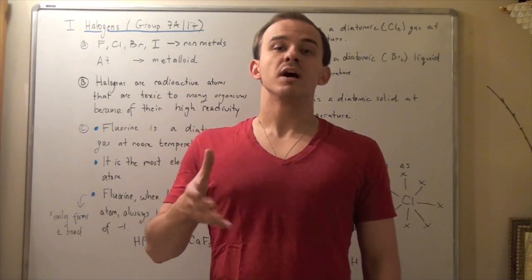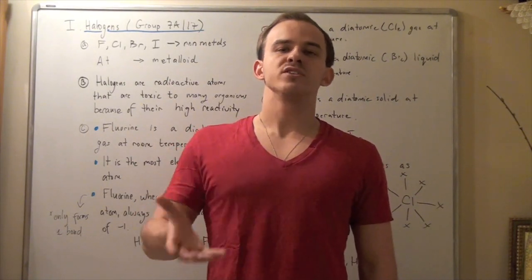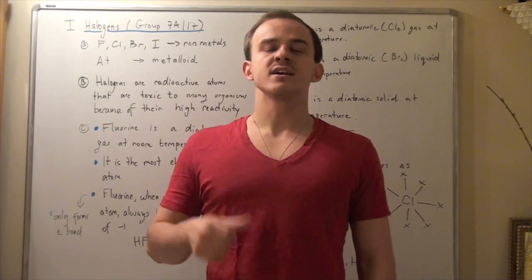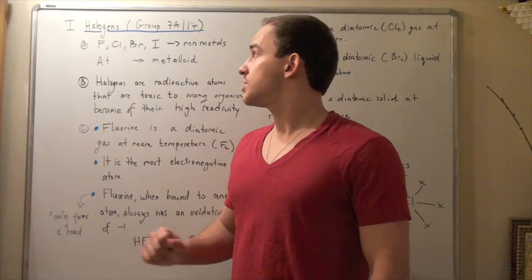In this lecture, we're going to talk about group 7A elements, also known as group 17 according to our newer system. These guys are known as the halogens, and we're going to look at five halogens.